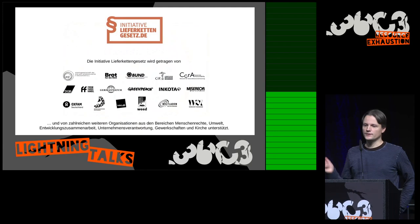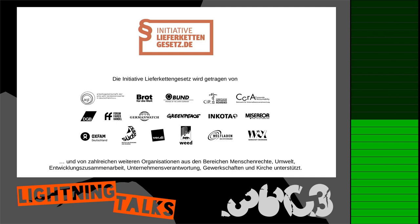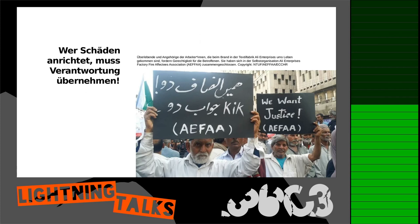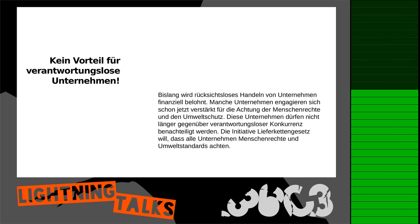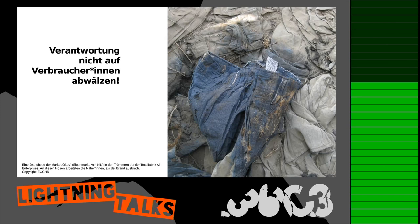Deswegen gibt es die Initiative Lieferkettengesetz, die ich euch heute vorstellen möchte. Das ist ein breites zivilgesellschaftliches Bündnis, getragen von vielen großen Organisationen wie Brot für die Welt, Greenpeace und Ver.di und von vielen weiteren unterstützt. Die Kernaussagen: Wer Schäden anrichtet, muss Verantwortung übernehmen. Wenn ein Unternehmen im Ausland wirkt — etwa indem es in einer unsicheren Fabrik T-Shirts herstellen lässt oder Zertifizierungen unrechtmäßig erteilt — dann muss es dafür zur Verantwortung gezogen werden können.